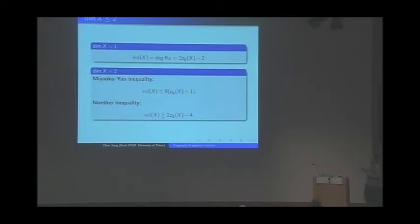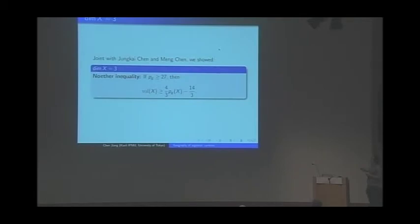In dimension one, we have that the volume is just two times the genus minus two, a special case of Riemann-Roch theorem. In dimension two, we don't have equality but we have two very nice inequalities: one is a consequence of Miyaoka-Yau inequality, which says the volume is bounded from above by nine times the genus plus one. The other is the lower bound called the Noether inequality. We want to generalize this Noether inequality into higher dimension. In dimension three, this is joint work in progress with Chen and Chen. We show that if the geometric genus is bigger than 26, then we have the following form of Noether inequality. If we replace 14 by 10, then this inequality becomes the best inequality. Thank you.